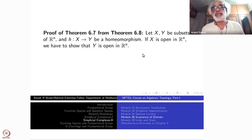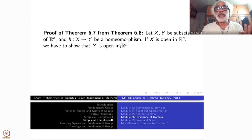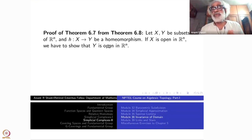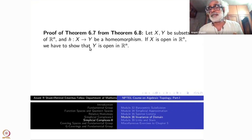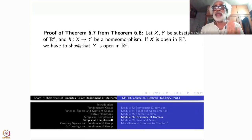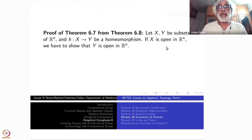We have two subsets X and Y of R^n and a homeomorphism H from X to Y. This homeomorphism is defined from X to Y, not on the whole of R^n to R^n. If there were a homeomorphism from R^n to R^n which takes X to Y, then this theorem would be obvious — an open subset's image would be open. The crux is that H is defined only from X to Y and may not be extendable to the whole of R^n, but we want to prove that if X is open in R^n, then Y is also open in R^n.